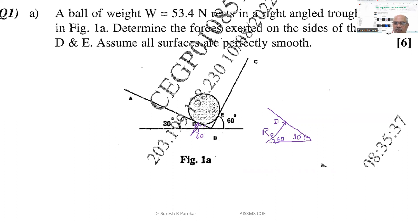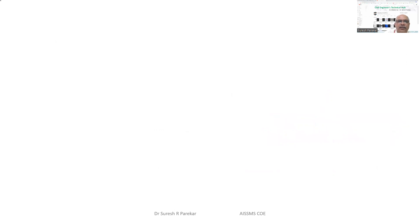Similarly, for point E, if you draw at greater scale, you have 60 degrees perpendicular to the surface again. If you extend this line you will get this angle equal to 30 degrees. So we have R_D, R_E, and then my weight is acting. The weight acts at the point where these two lines intersect, because this is a problem from the concurrent force system. So 53.4 N.